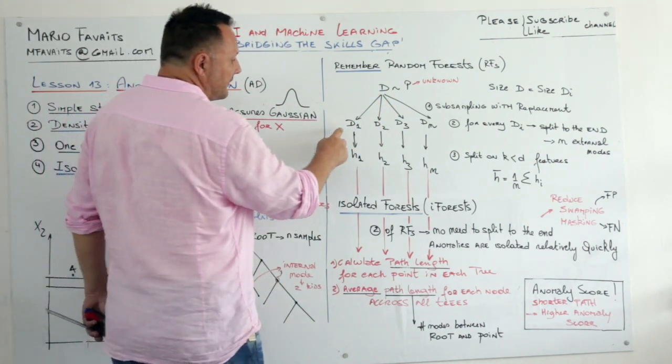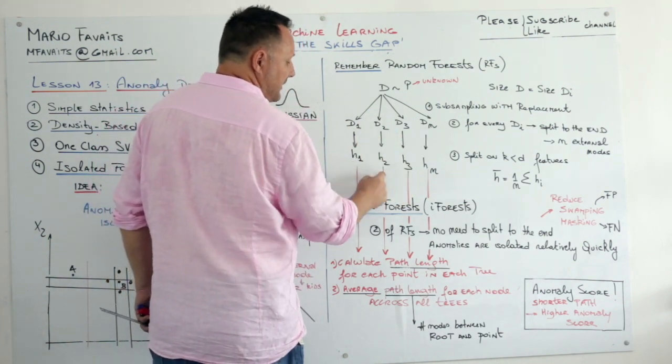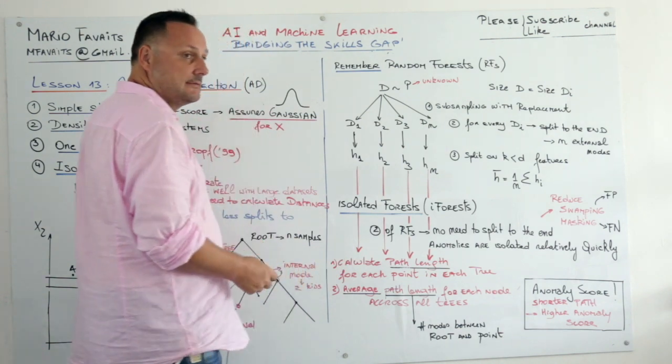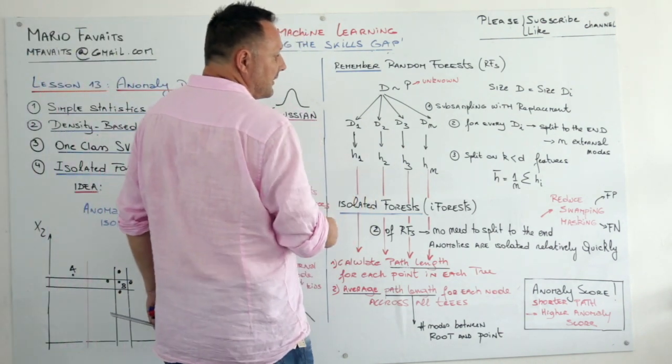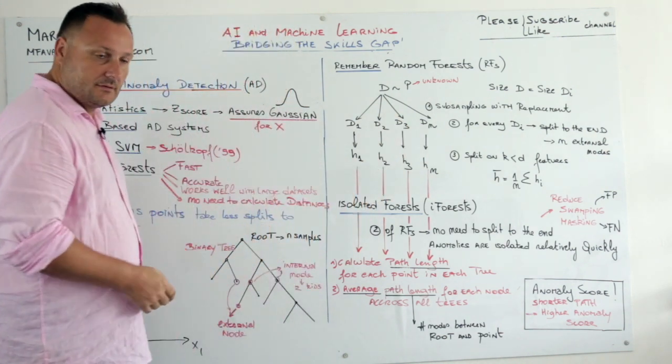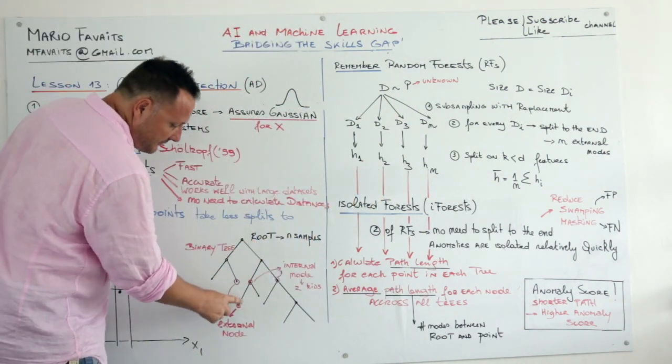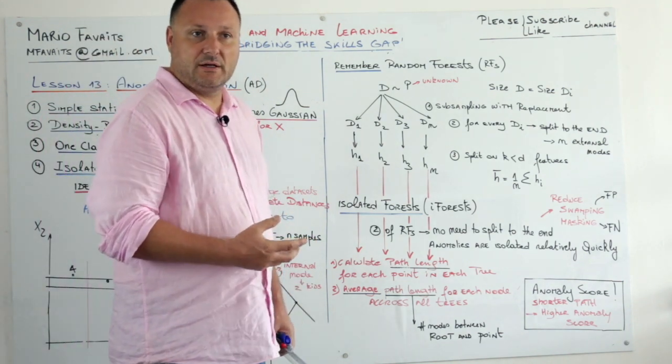So once you have your datasets, you're going to build trees resulting in a model H1 to Hn. And the way we're going to split is you're going to split right through the end. So for every D you're going to split right until the points are isolated. So you're clearly overfitting.